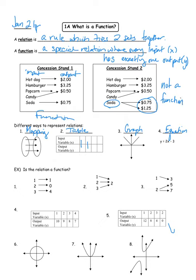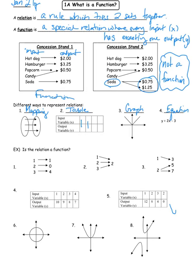When thinking about what a function is, go back to the concession stand idea: if I come to your concession stand, are you going to give me only one output? Below I have eight different representations, and your job is to figure out if each is a function or not. Please take a look at the first three examples — those are all mapping diagrams.